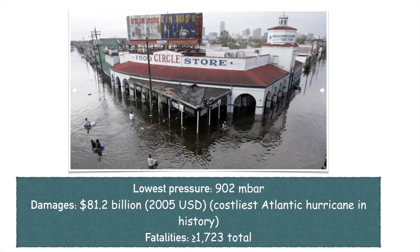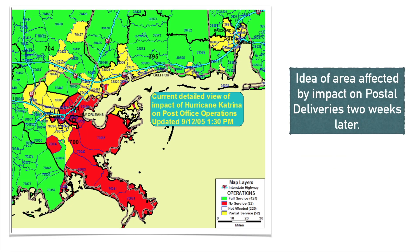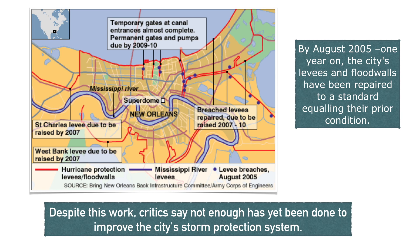Hurricane Katrina had a hugely low pressure of 902 millibars and caused extensive damage. It was the costliest Atlantic hurricane in US history. Over 1,700 people died. By August 2006, one year after, the city's levees had been repaired to a standard equaling their previous condition.